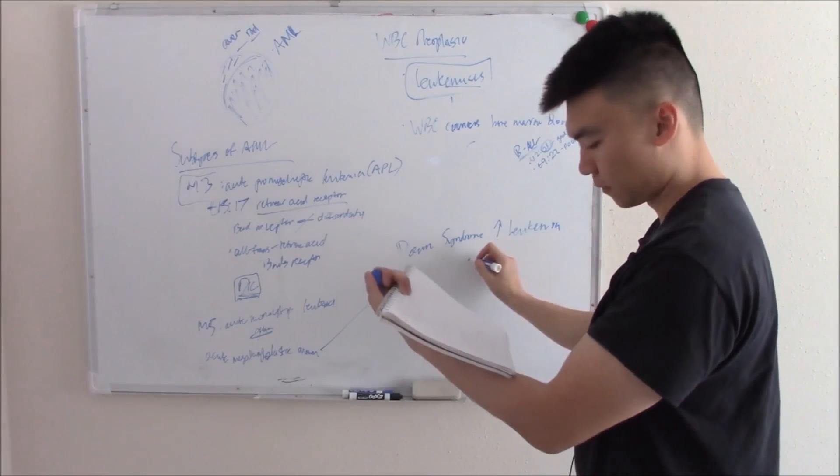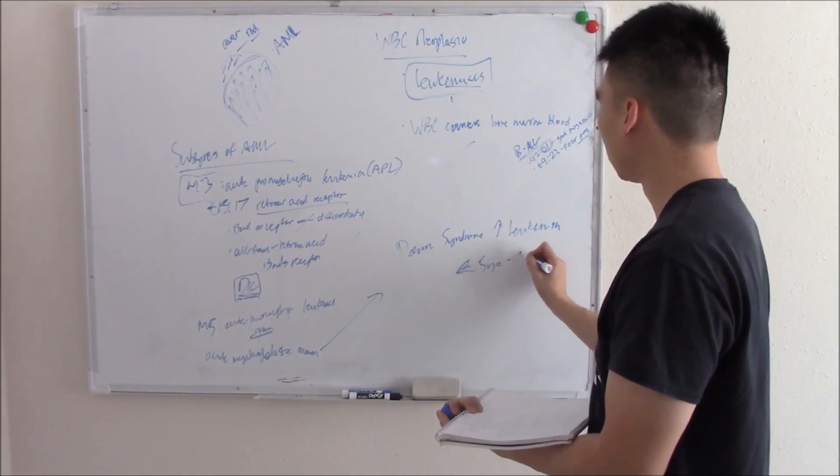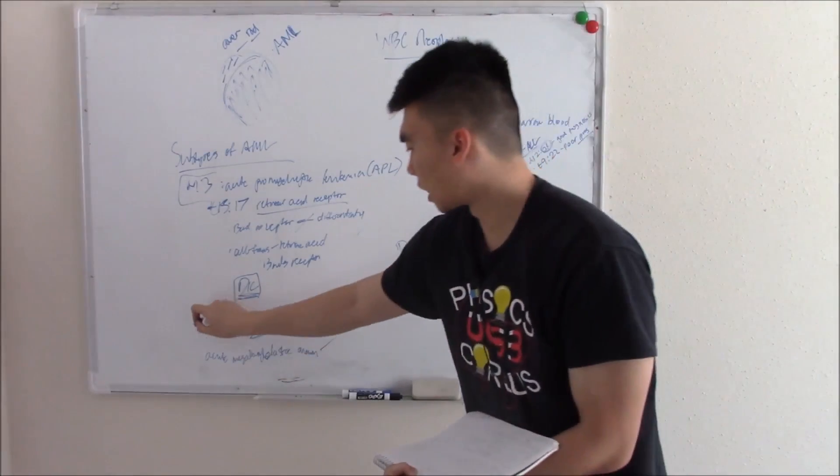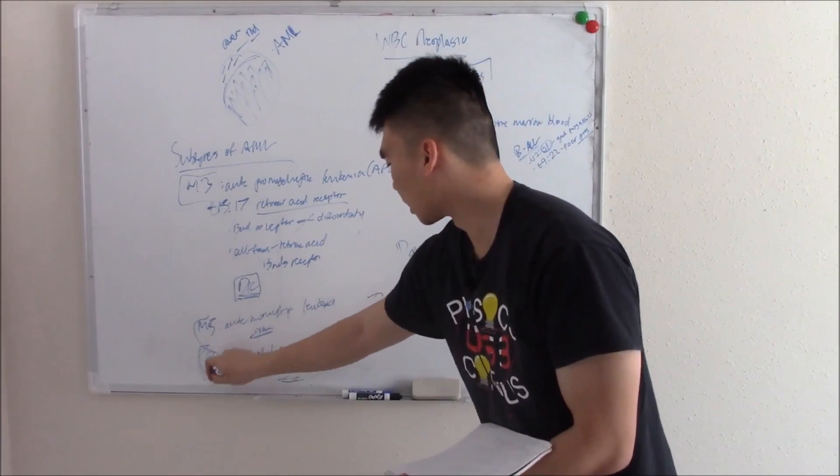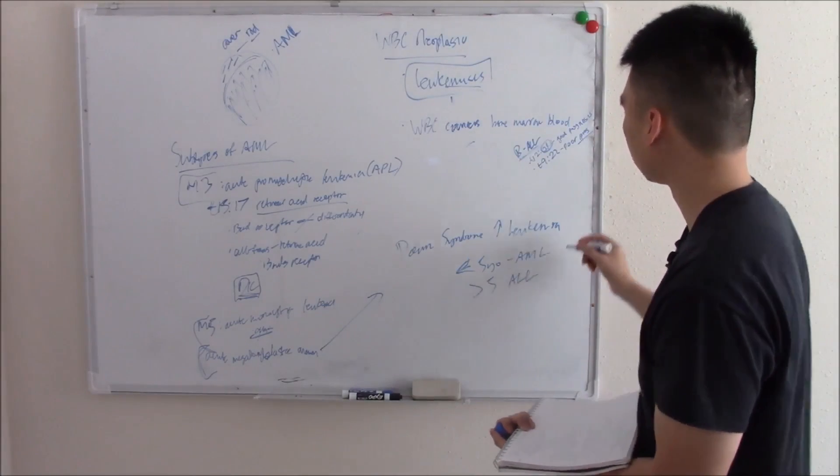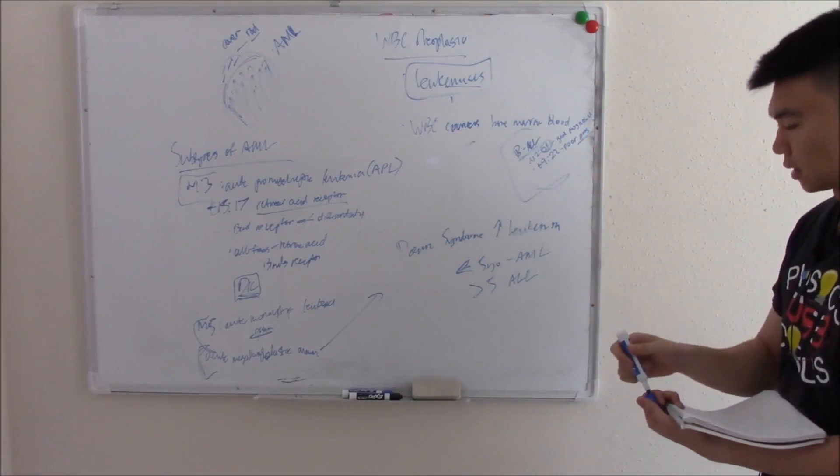In particular, when they're under five years old, they get AML, this subtype, acute megakaryoblastic. Once they're over five, they get ALL.